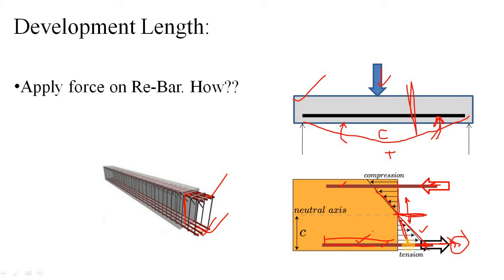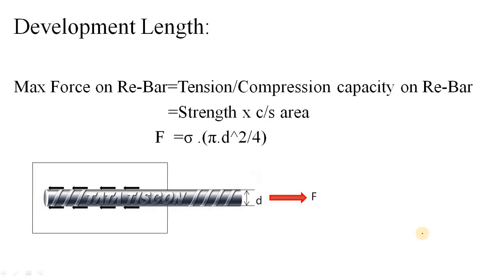Everything depends on the strength. If you provide a Fe 250 bar, its capacity is less compared to Fe 500, and Fe 500 is less than Fe 600. We will assume the bar carries its maximum capacity — we will not calculate the tension based on applied moment or load; we simply calculate it from the strength point of view.